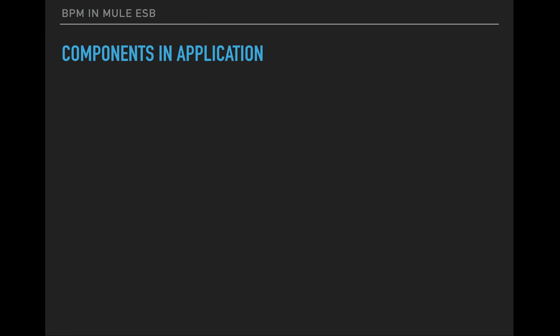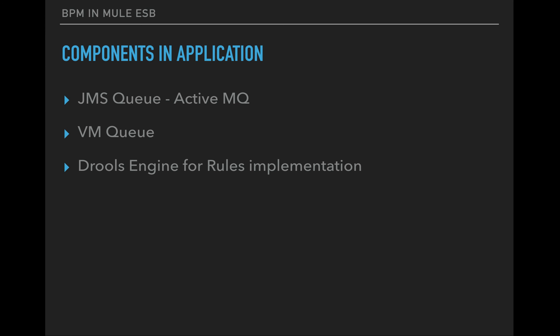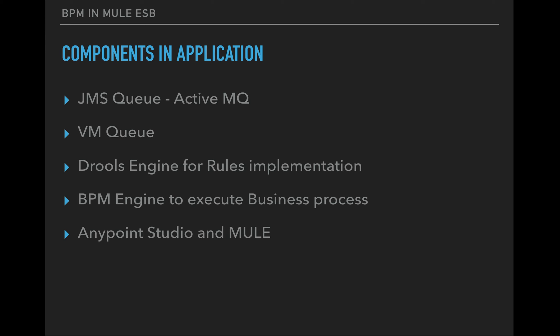The components I am going to use are: JMS queue - basically ActiveMQ. I am already running ActiveMQ on my local. I'm not going to cover how to set up ActiveMQ as it's very simple - you can just download it. I will share the command to run it and I'm using default ports, I didn't change anything for ActiveMQ. Then VM queue will also be used internally to manage my application. Then the Drools rules engine for rule implementation, then BPM engine to execute the business process, and of course Anypoint Studio and Mule to actually write our application.